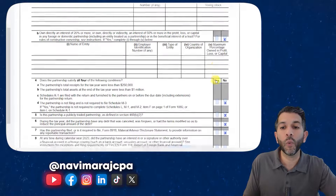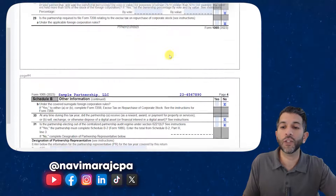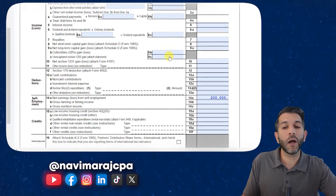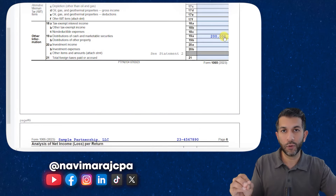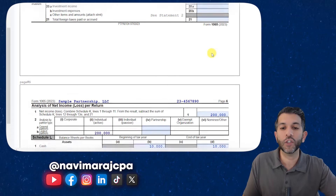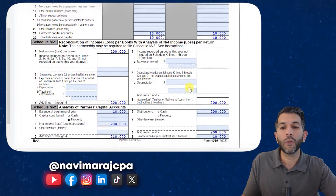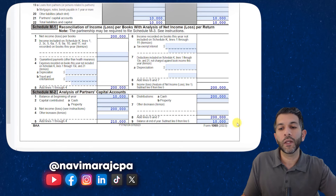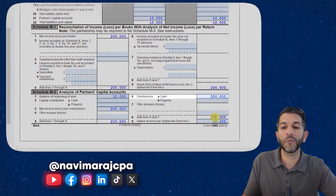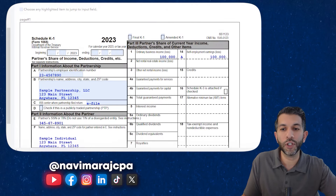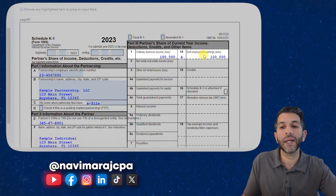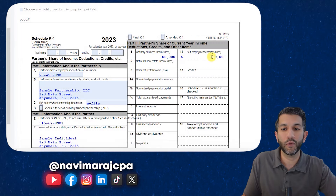The $200,000 is distributed to partner one and partner two. Each partner gets a Form K-1 from the partnership showing them their $100,000 of business income — all of which is subject to self-employment earnings. If you are a partner in a partnership receiving a W-2 from that partnership, there's likely a problem. Partners can receive a guaranteed payment or a K-1, but generally should not be getting a W-2.